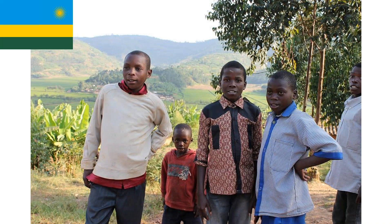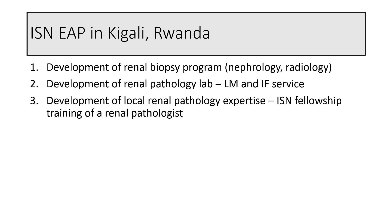I'll also tell you a story of our project in Rwanda, which was very different because there was no existing renal biopsy program. We had to start practically from scratch: first develop a renal biopsy program through nephrology and radiology to get the material, then develop the renal pathology lab with light microscopy and immunofluorescence service. While they had light microscopy, for renal biopsies you need thin and perfect sections with special stains — at least PAS and trichrome. To make it sustainable, you also have to develop local renal pathology expertise.